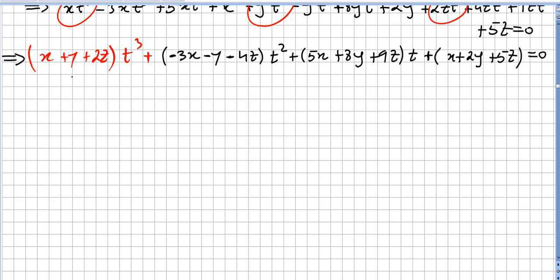Now of course I have to put this one equal to 0, this one to 0, etc. So that will be x plus y plus 2z equals 0. Minus 3x minus y minus 4z equals 0.